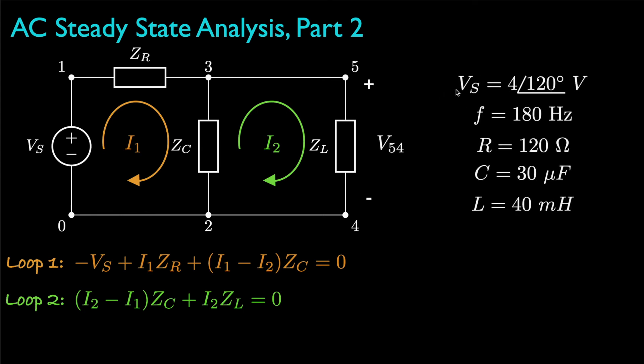Now, let's look at an example where the voltage source has a voltage of 4 volts with a phase of 120 degrees at a frequency of 180 hertz, the resistor has a resistance of 120 ohms, the capacitance 30 microfarads, the inductance 40 millihenries, and let's suppose we'd like to know the voltage drop from node 5 to node 4.